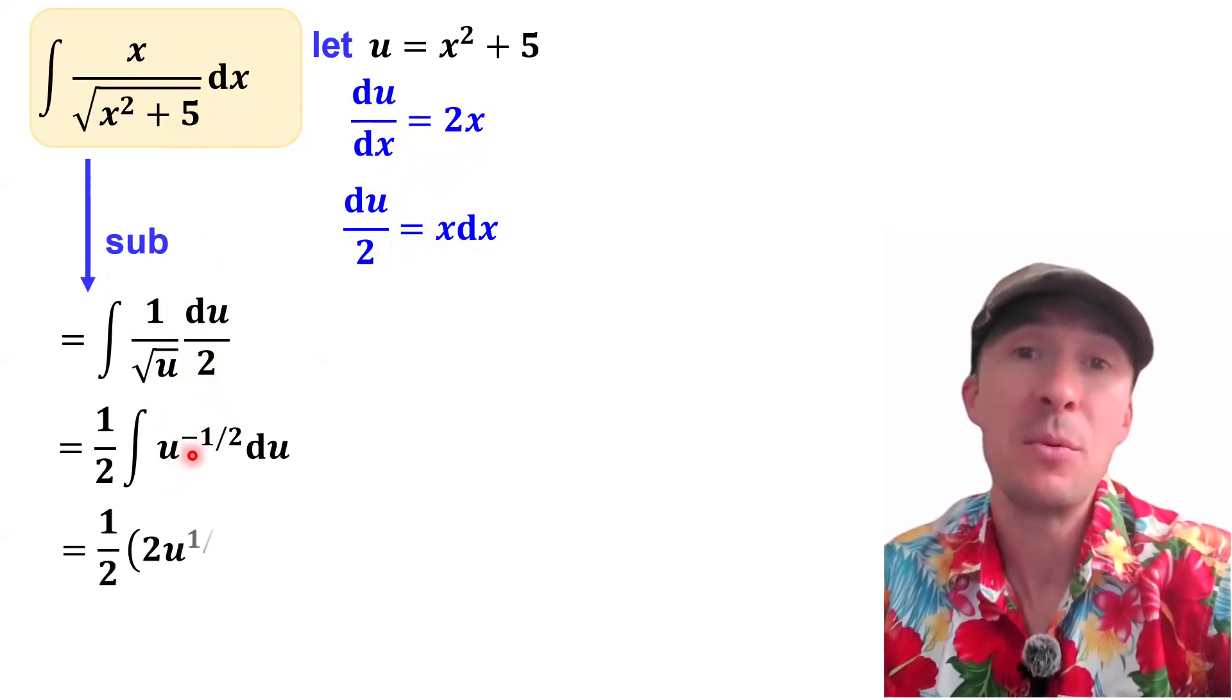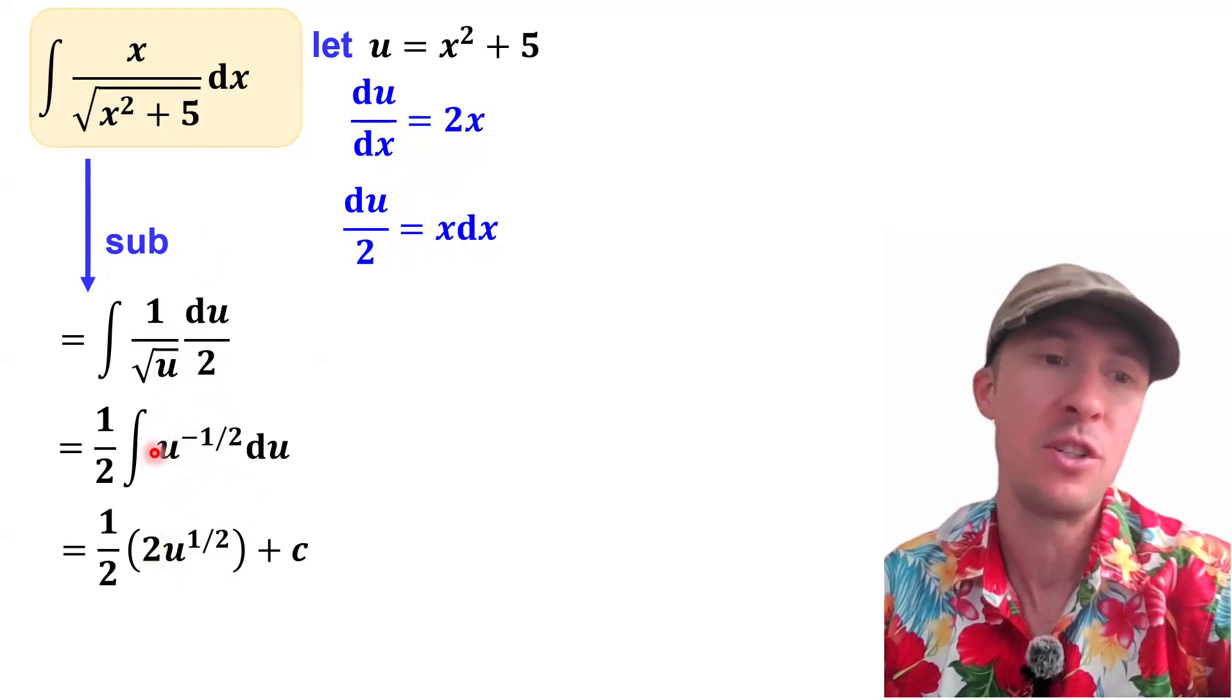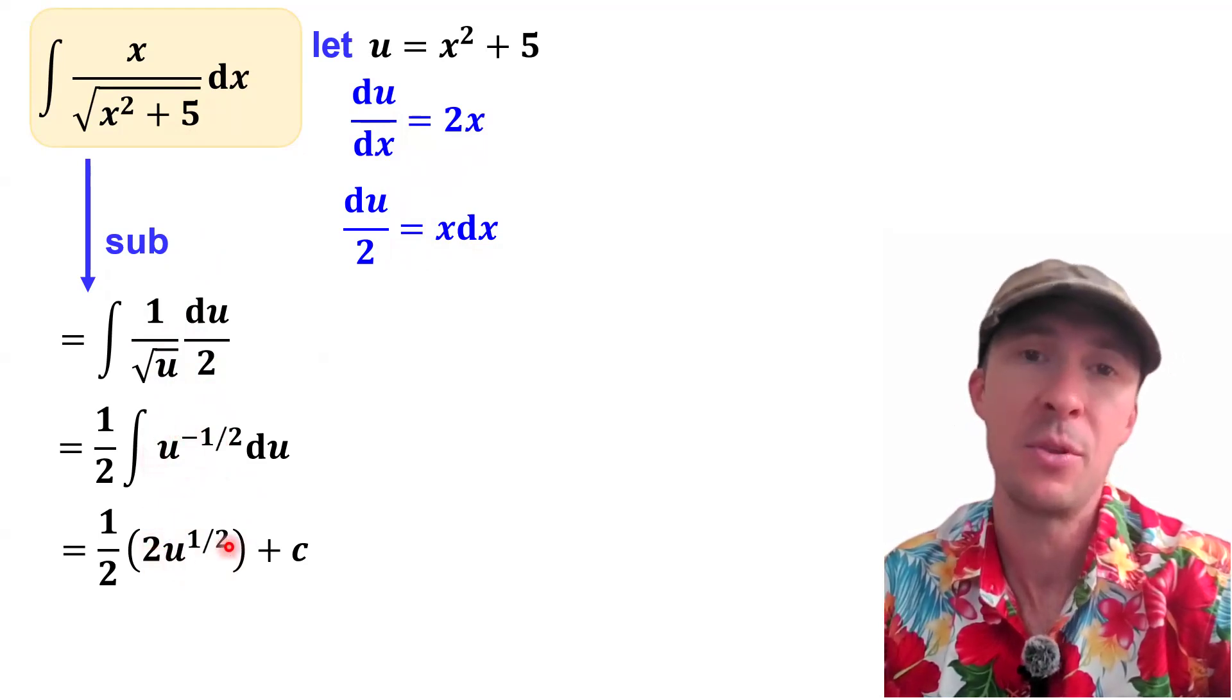And now for our integration, we'll do the reverse power rule. So we'll add 1 to the exponent and then we've got to have this 2 right here because imagine you go the other way and take the derivative. We don't have a 2 here, so this 2 has to cancel out with the one half.